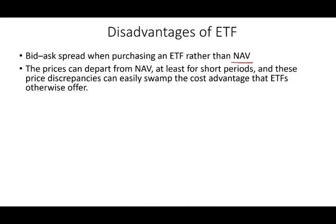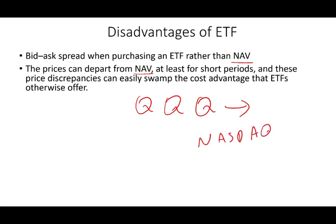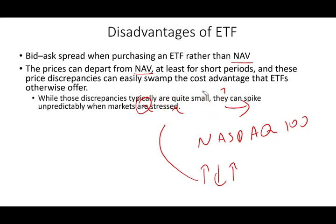Also, the prices can depart from NAV. Think about QQQ — it tracks the NASDAQ top 100 stocks. As those stocks within the NASDAQ 100, like Amazon, Apple, Facebook, and Google, go up and down continuously, the QQQ has to follow. But sometimes it moves very fast, so you might have a few split seconds where the QQQ is not 100% tracking the NASDAQ 100. There could be some price arbitrage opportunities, but that's very small.